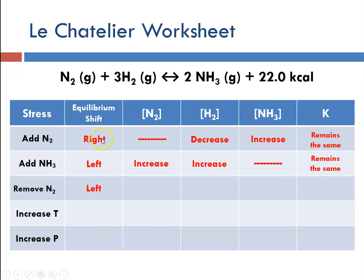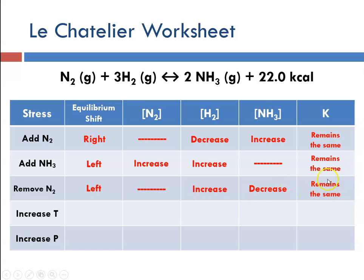If we remove nitrogen, we're removing reactants, so we're going to shift left to form more reactant. That means hydrogen will increase, ammonia will decrease, and again changes in concentration don't change the K value.